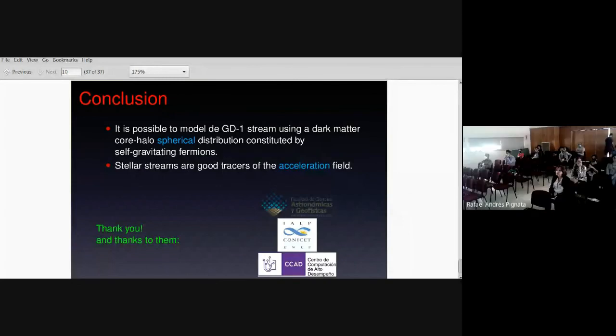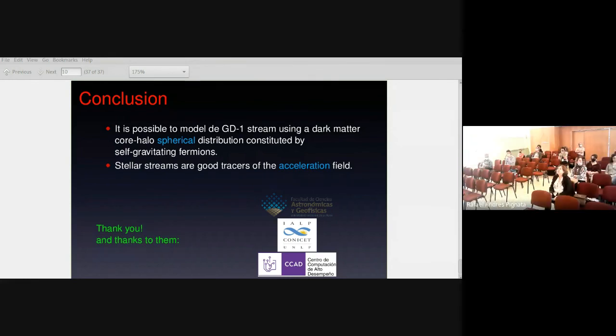We have time maybe for one or two short questions, if there are in the audience or in the chat. Remember, if you think of questions later, you can leave them in the Discord server. Just in case. I have one very general question. This is a question maybe for Carlos as well. Because I don't know much about this. But is fermionic dark matter an alternative to models such as F(R) or do they work within them?